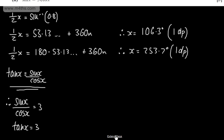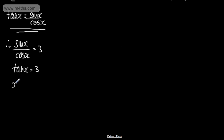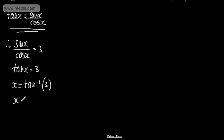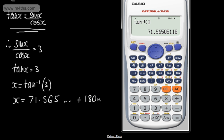We'll get a principal value for x. x = inverse tan of 3. Using the calculator in degrees mode, inverse tan of 3 gives 71.565... So x = 71.565... plus multiples of 180 degrees. The tan curve cycles every 180 degrees.